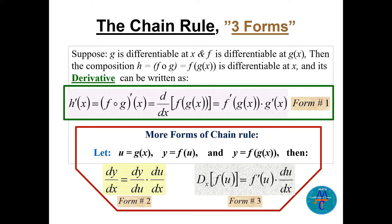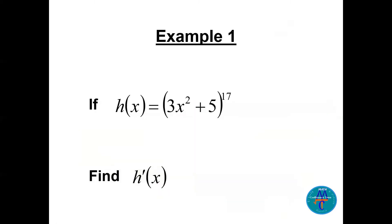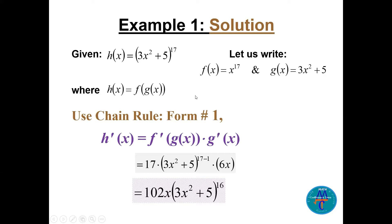Example 1: h(x) = (3x² + 5)^17. Let's find h prime. We take f(x) = x^17 as the outer function and g(x) = 3x² + 5 as the inner function. Their composition is h(x) = f(g(x)), so we apply chain rule form number one: f prime of g(x) times g prime(x).